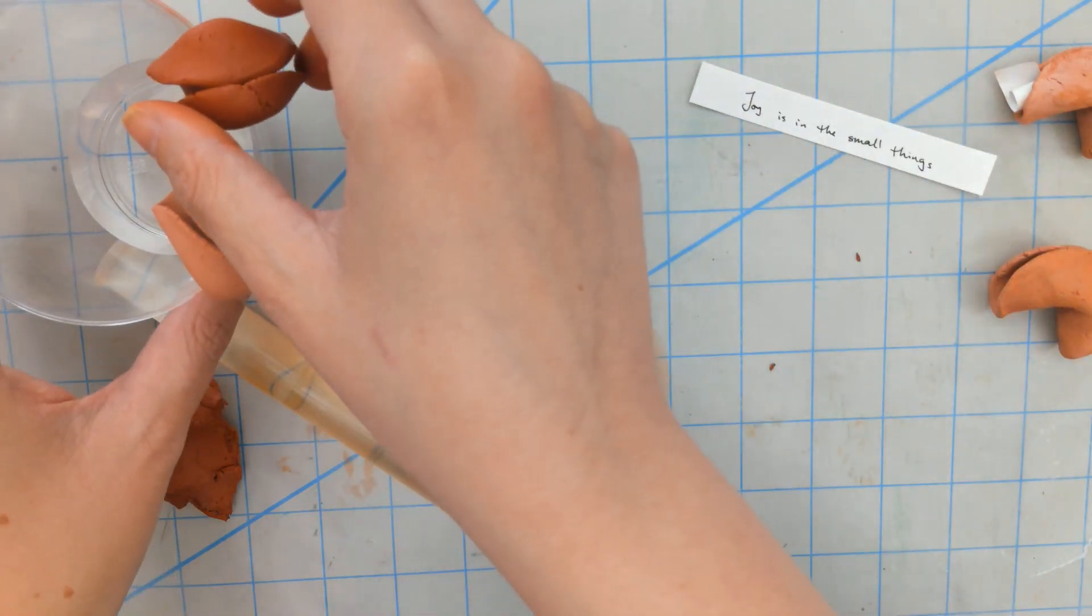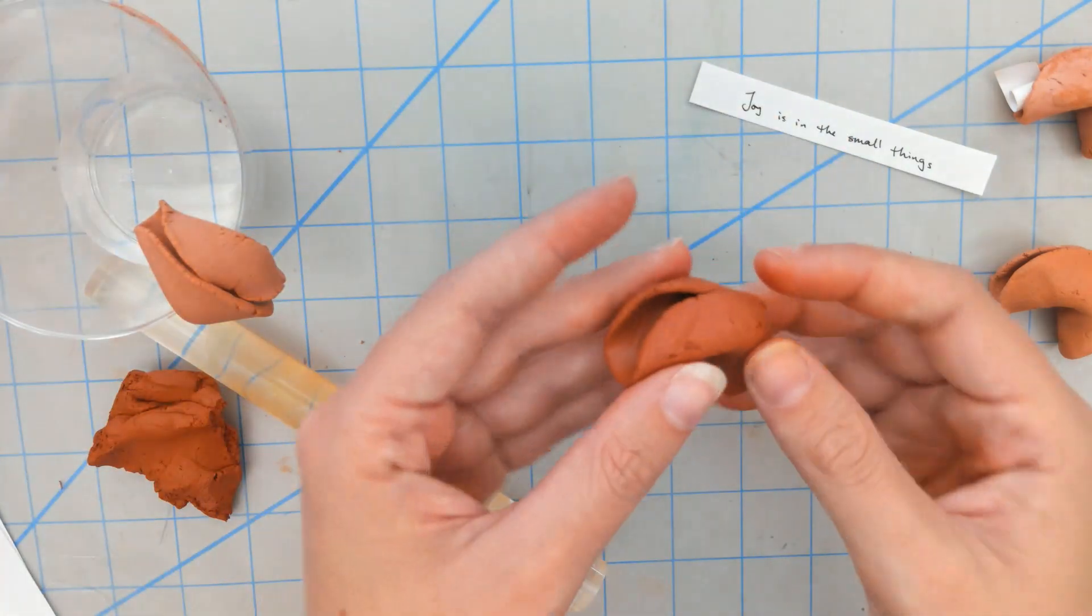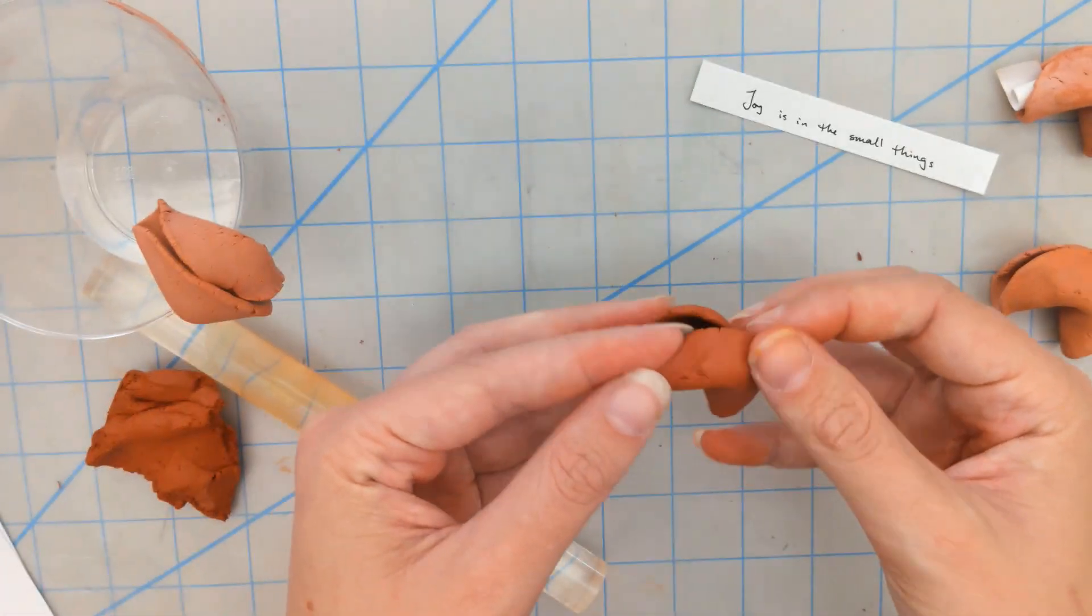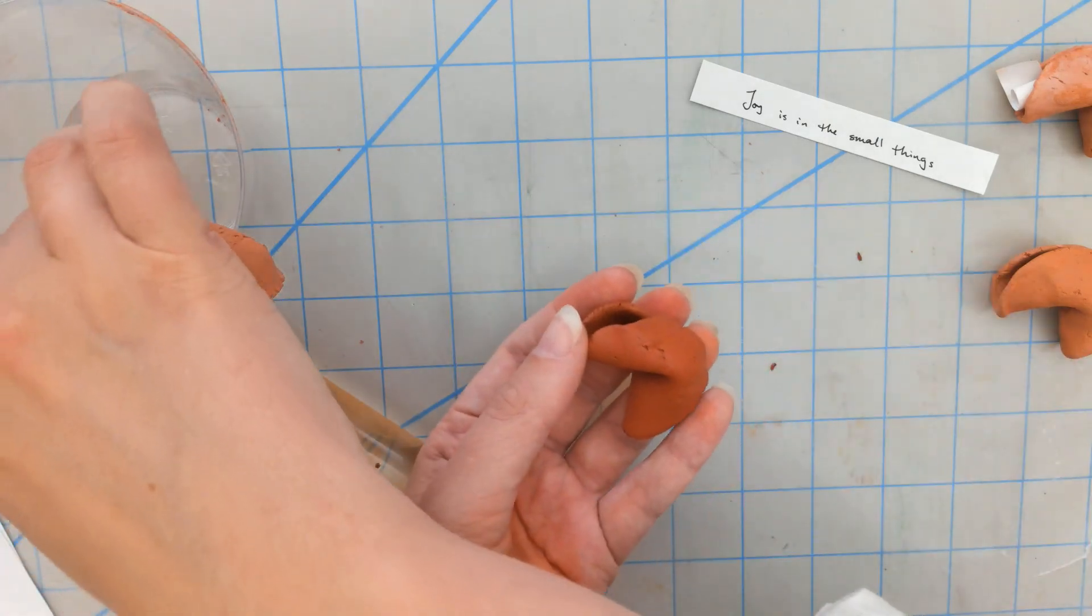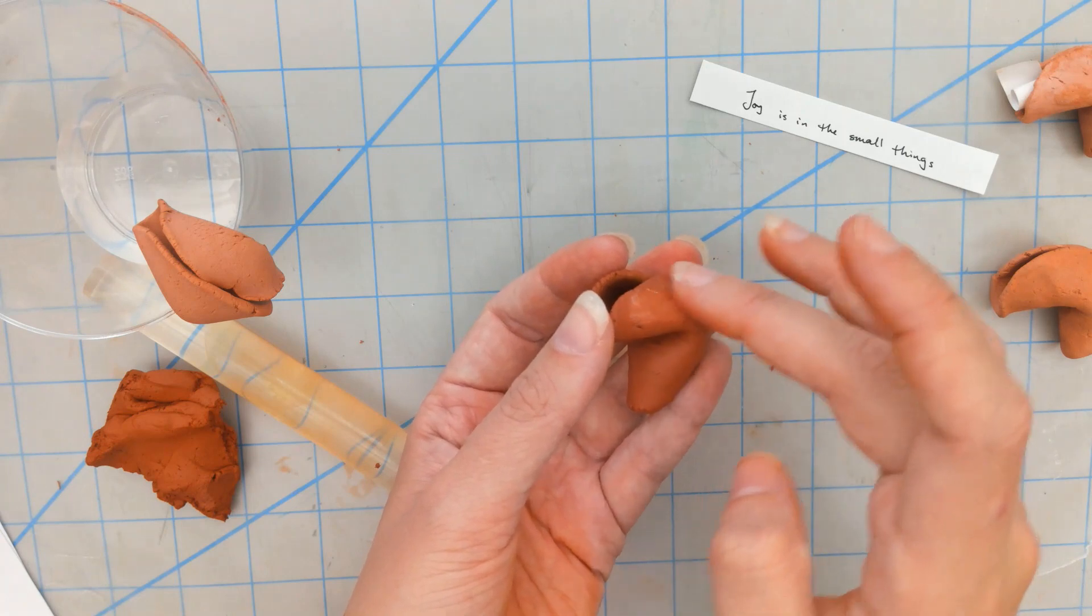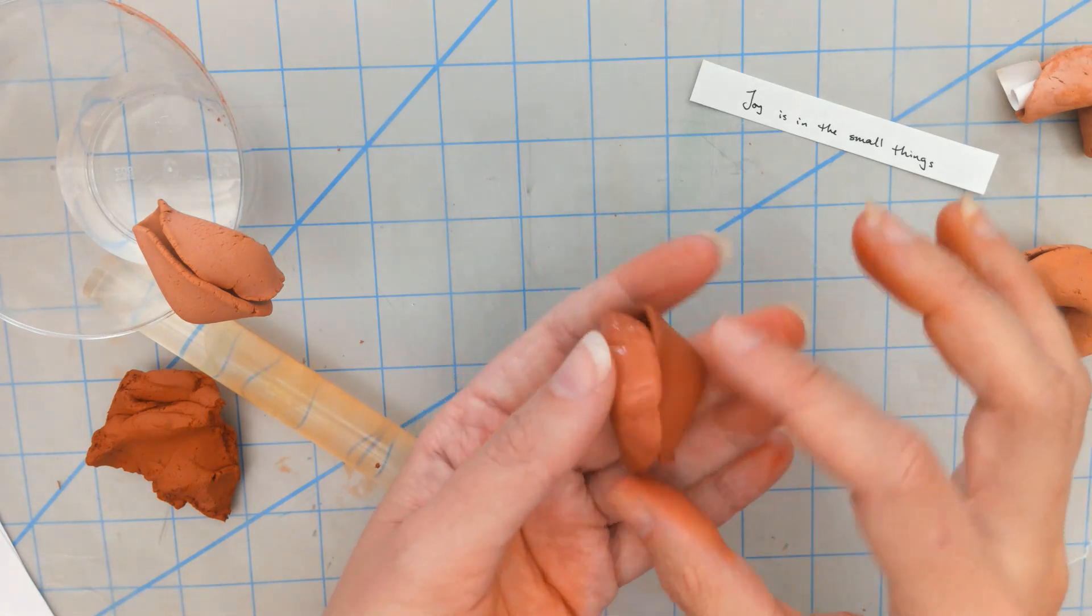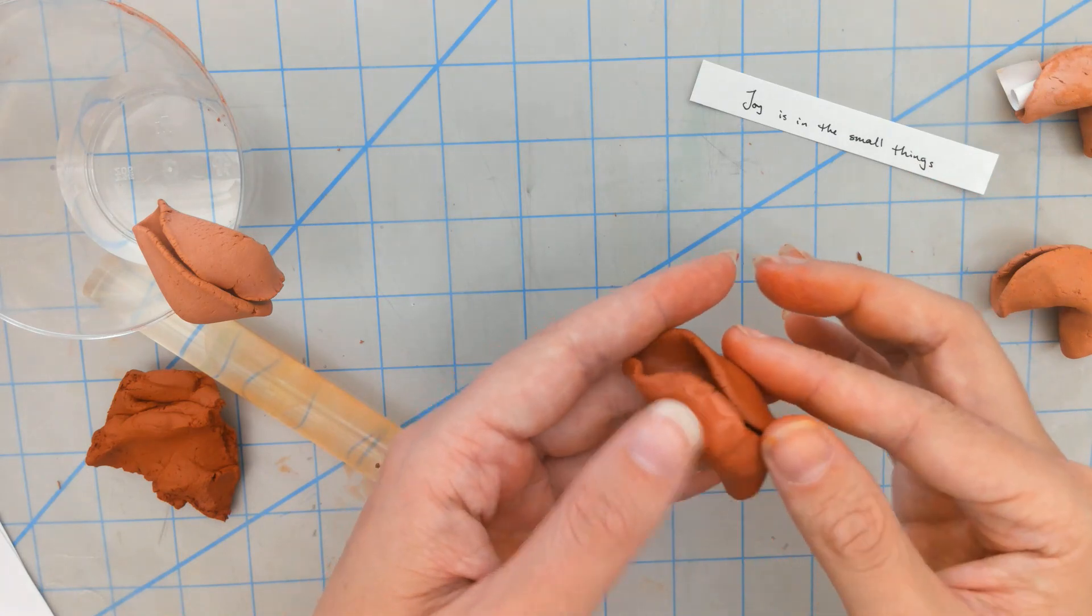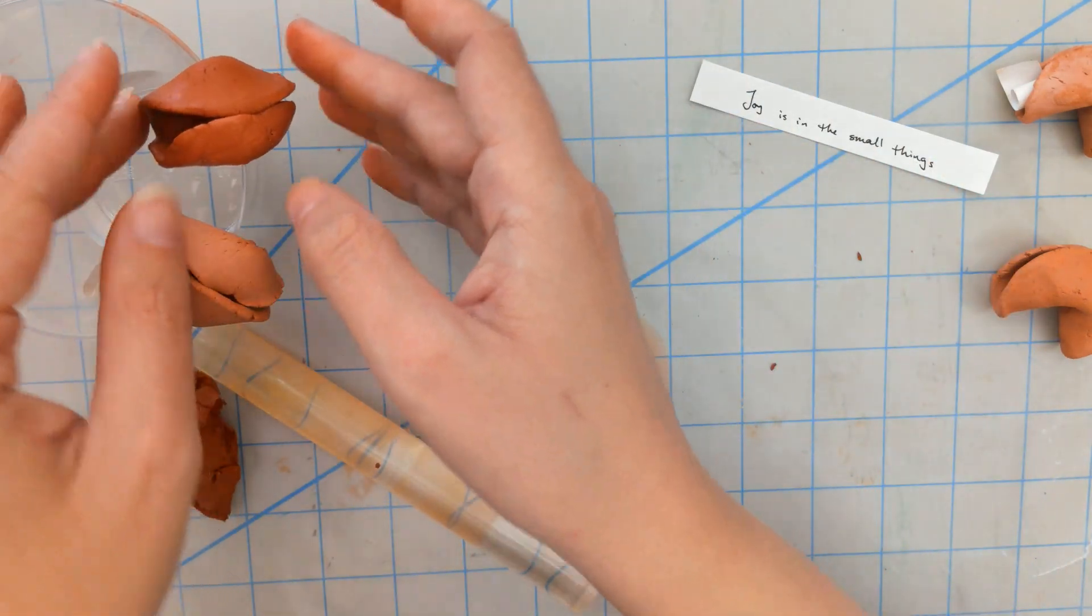Once we have it roughly into our fortune cookie shape, we are going to let it dry on the edge of our cup. Once you have their shape, you can go ahead and clean up any of those spots, any of your cracks. Just take a dollop of water and smooth that over.